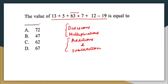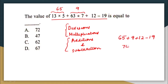So: 63 divided by 7 is 9, and 13 multiplied by 5 is 65. Now we have 65 plus 9 plus 12 minus 9. That gives 74 plus 12 minus 9, then 86 minus 19, which equals 67. The correct answer is option D, 67.